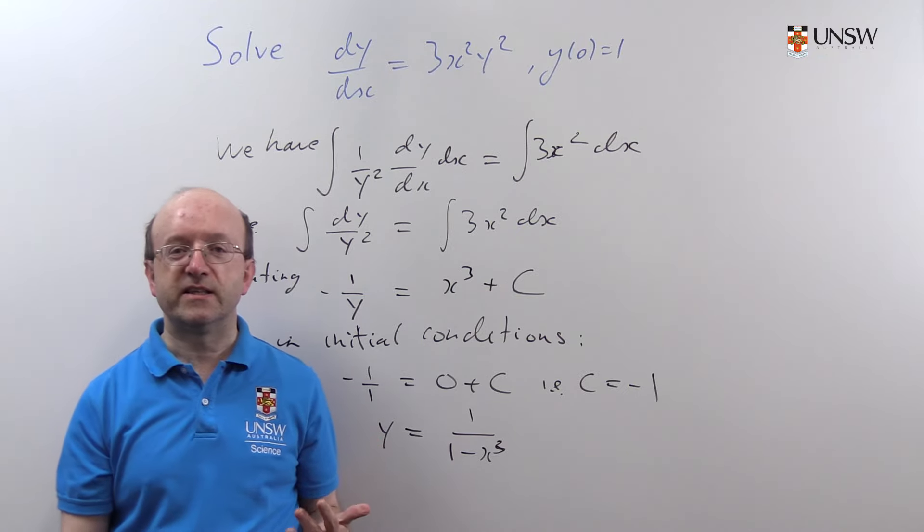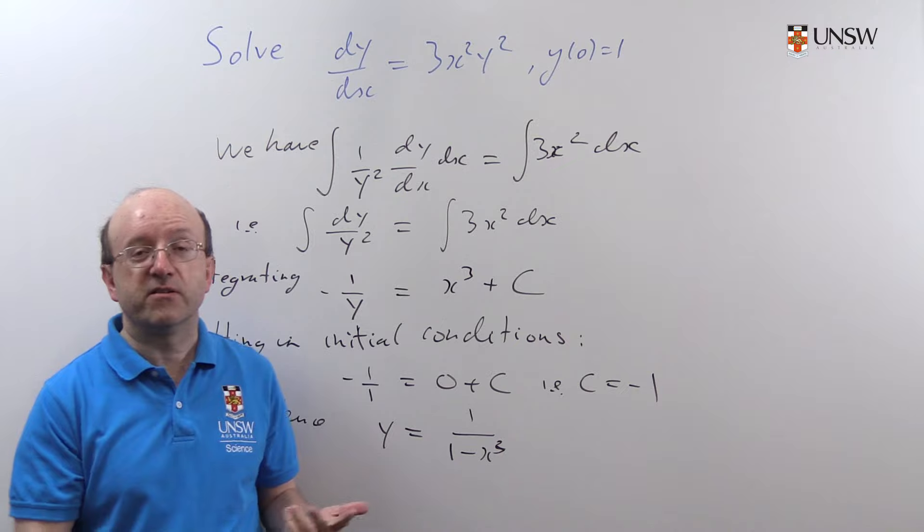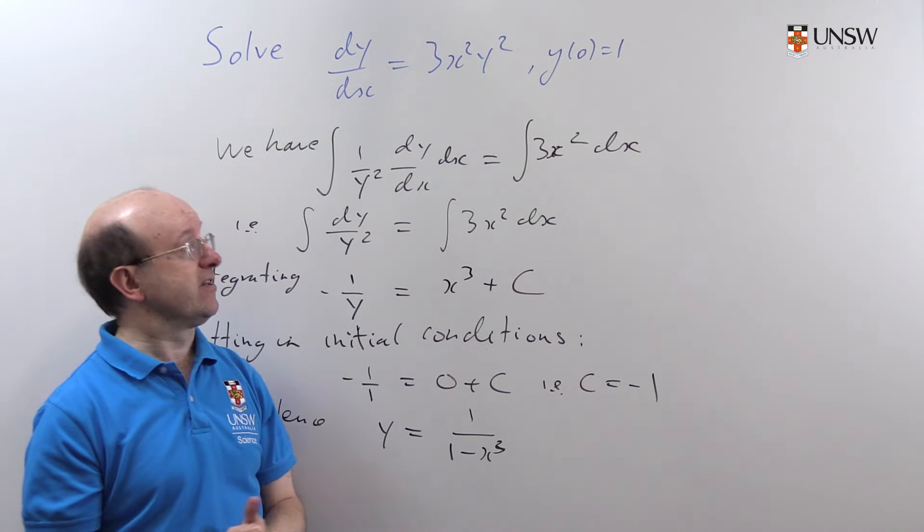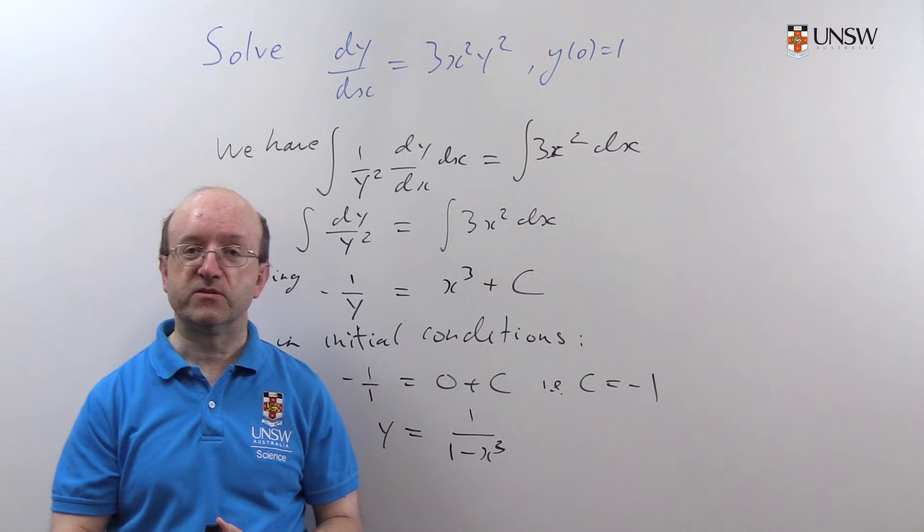You can check this out if you're a little uncertain. You can differentiate this quite easily with respect to x and check that dy/dx is indeed 3x²y². But it's obvious as well that y(0) = 1.